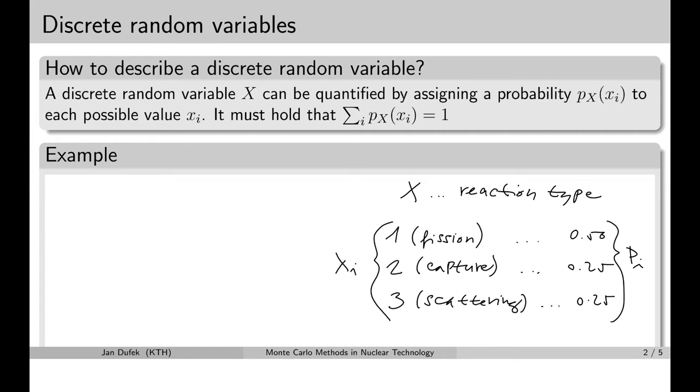We can also display this information in a plot form. Let's have probabilities on the vertical axis and the reaction types on the horizontal axis. So we have reaction type number 1, fission, 2 for capture, 3 for scattering. And then probability 50% is assigned to fission, 25% is assigned to capture and 25% is assigned to scattering.